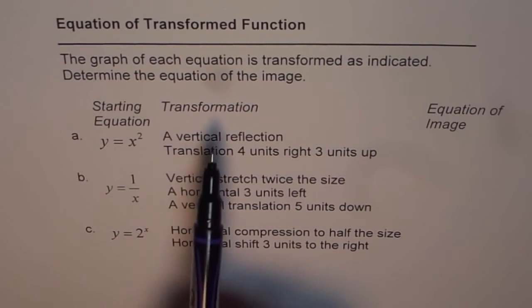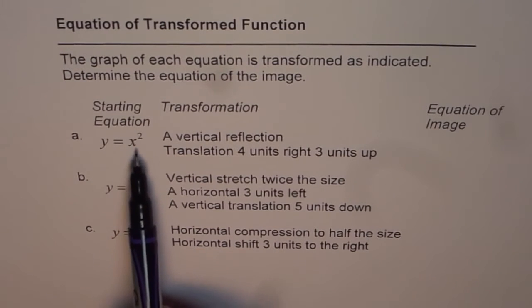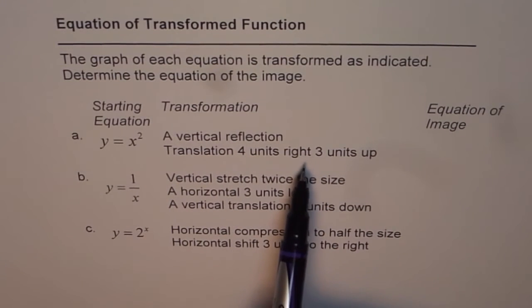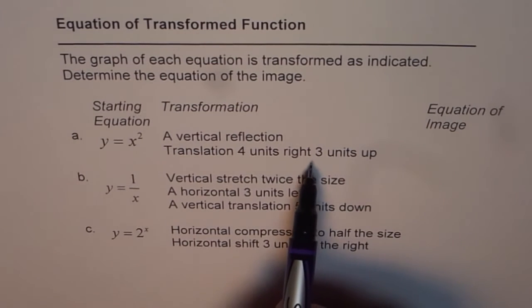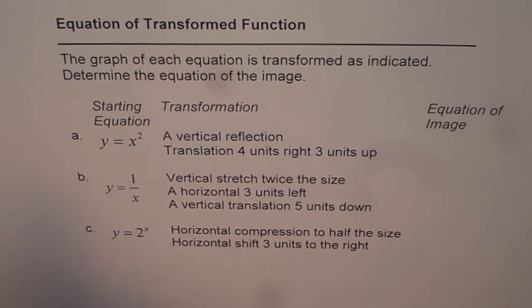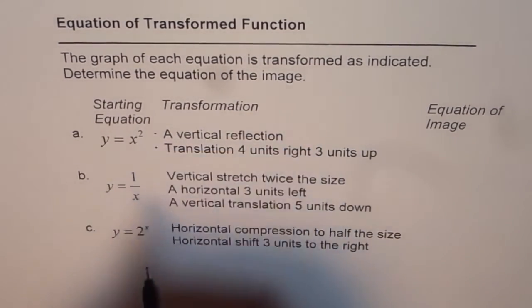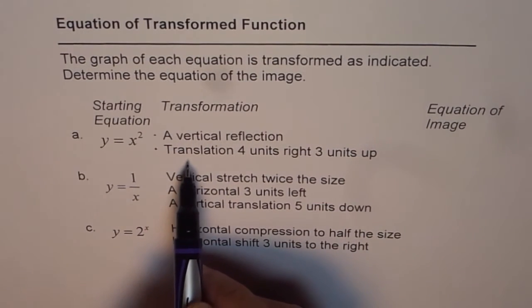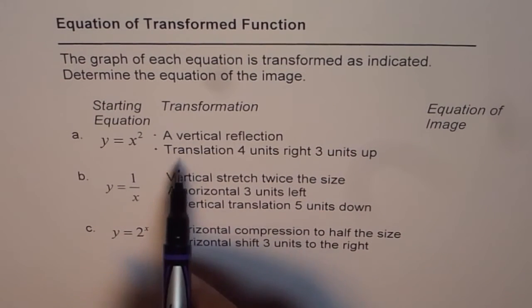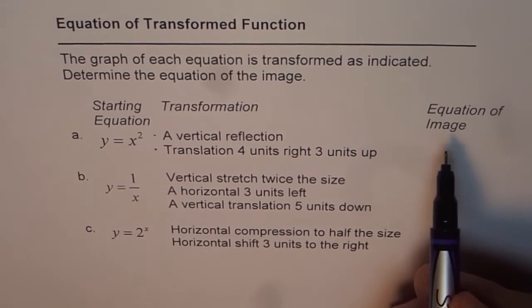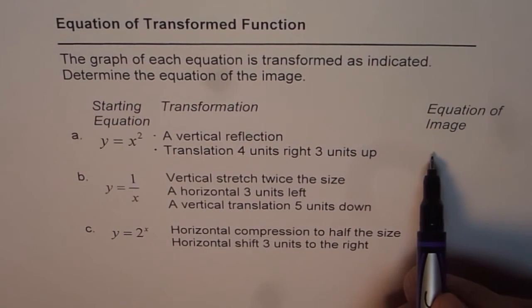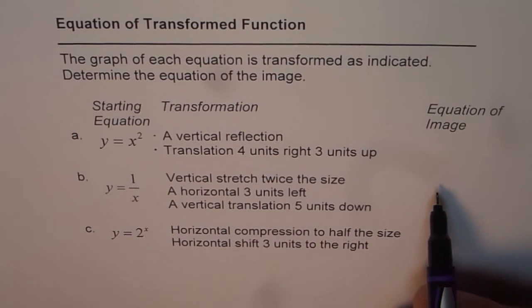For part a, the transformations applied on y equals x squared are: a vertical reflection, a translation of 4 units right, and 3 units up. These are the three transformations. After these, what is going to be the equation for the image or the transformed function? I'd like you to pause the video, answer this question, and then look into my suggestion.